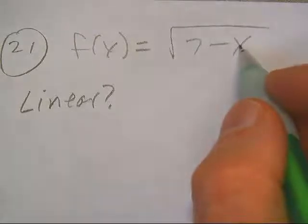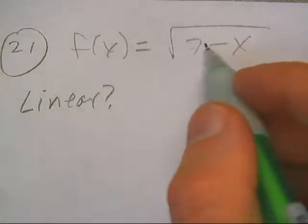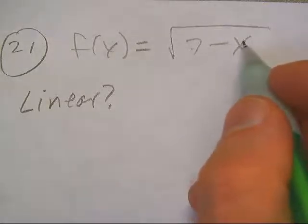Anytime x gets bigger than 7, we're going to get—like if it was 8, 7 minus 8 is negative 1—we're going to have a problem in there. So this is where we have a hard time.